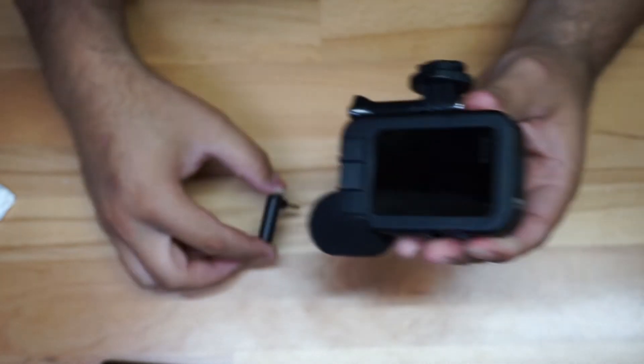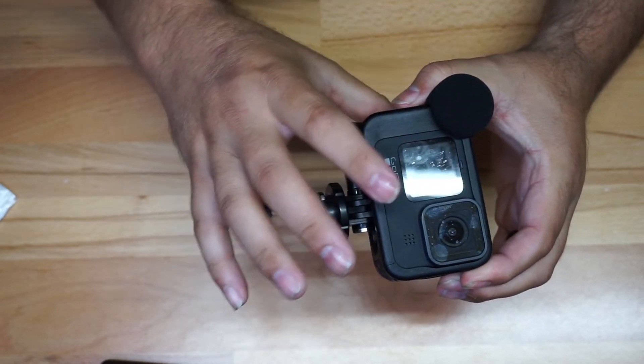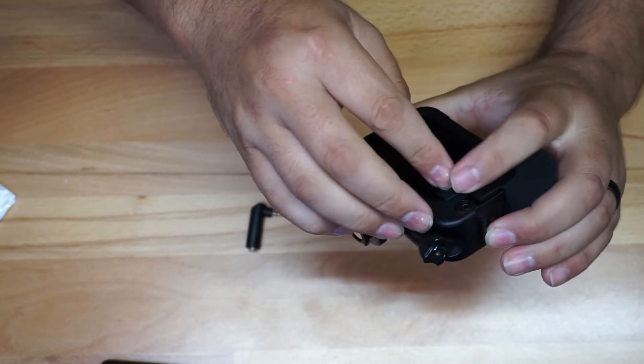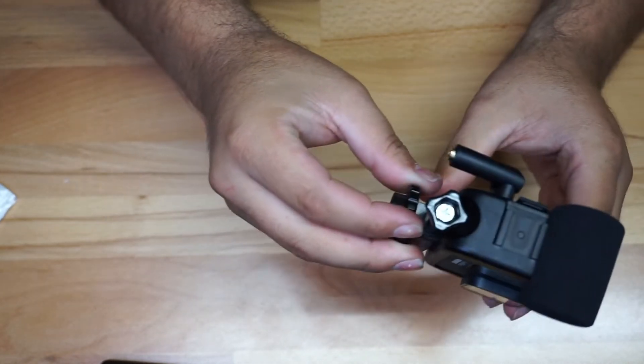I've got my GoPro right here, and the way I use it: I have the media mod, and it has an input back here which is 3.5mm. What I do is put this right there, and now as you can tell, I've got that 90-degree turn.